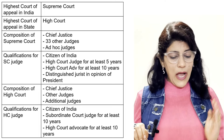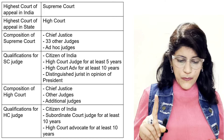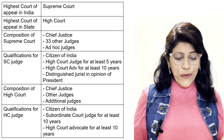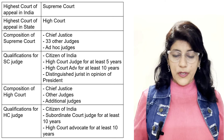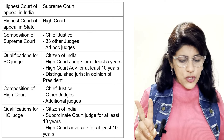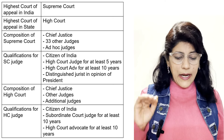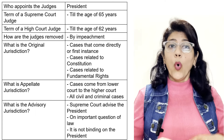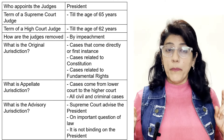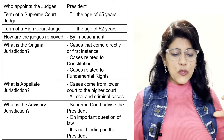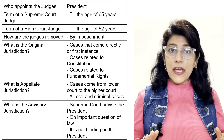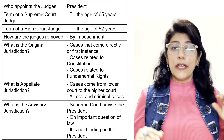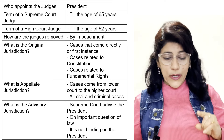Composition of High Court: Chief Justice, other judges, and additional judges. Qualifications for High Court judge: citizen of India, subordinate court judge for at least 10 years, and High Court advocate for at least 10 years. Who appoints the judges? The President. Term of a Supreme Court judge: till the age of 65 years. Term of a High Court judge: till the age of 62 years.